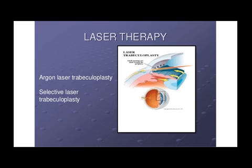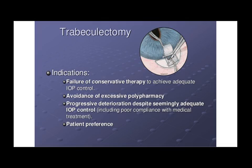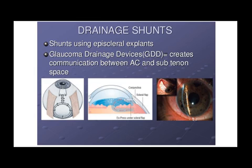If medical therapy is not working, we can use argon laser trabeculoplasty. If that is not working, the surgical method known as trabeculectomy can be used. Indications include failure of conservative therapy to achieve adequate intraocular pressure control, avoidance of excessive polypharmacy, progressive deterioration despite seemingly adequate IOP control, poor compliance with medical treatment, and patient preference. Trabeculectomy can be used in adjunct with anti-metabolites such as mitomycin C and 5-fluorouracil. In very refractory cases, drainage shunts can be used, such as shunts into the episcleral space — the Molteno and other glaucoma drainage devices.